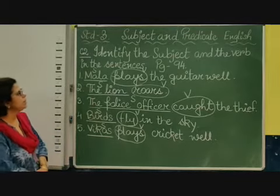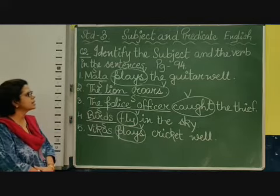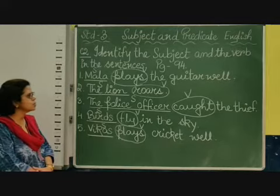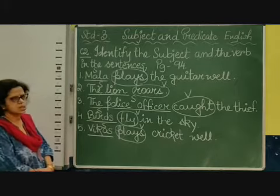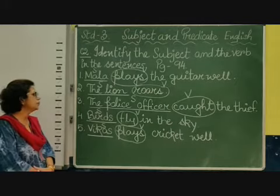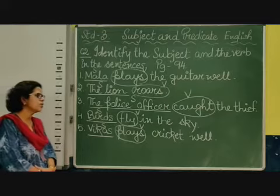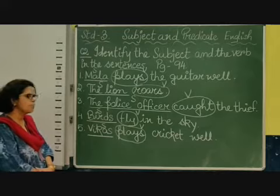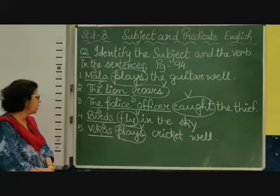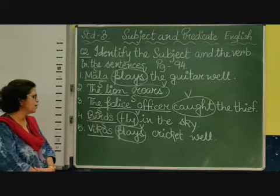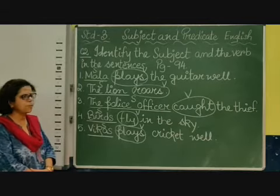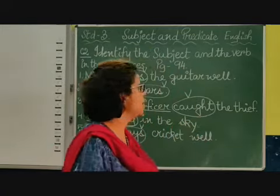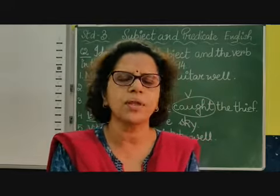So this is very simple. Number one: Mala plays the guitar well — Mala is the subject, plays is the verb. Number two: The lion roars — the lion is the subject, roars is the verb. Number three: The police officer caught the thief — the police officer is the subject, caught is the verb. Number four: Birds fly in the sky — birds is the subject, fly is the verb. Number five: Vikas plays cricket well — Vikas is the subject, plays is the verb. Please do it in your course book on page number 94, question number C2. Thank you, children.